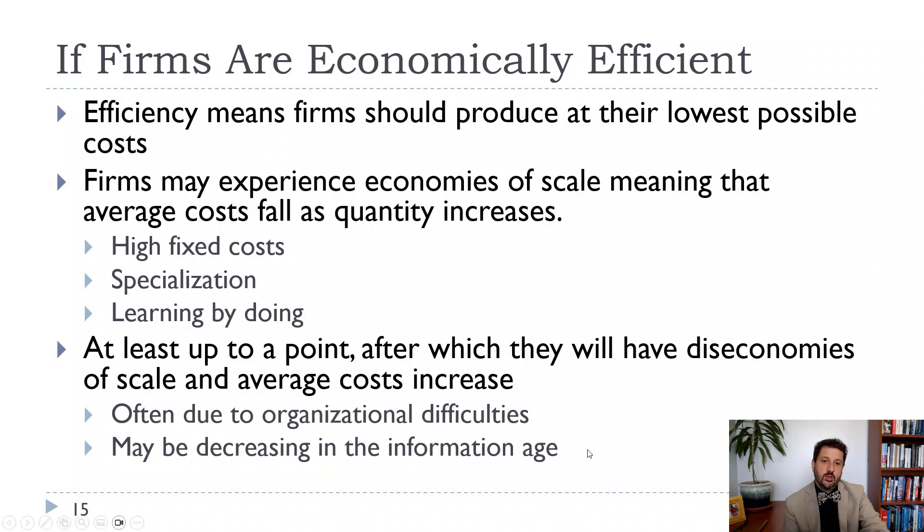That might be due to organizational difficulties or supply difficulties or any number of things. Although some of those things might be decreasing due to the information age. So one of Walmart's main advantages that allowed them to grow much bigger than other firms was their use of information technology to manage their supply chains super efficiently. And that allowed them to be bigger than stores could in the past.